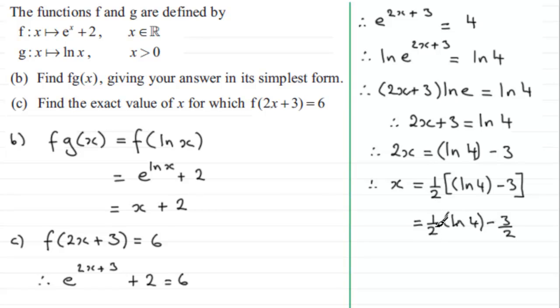And you can use this half, you can take it up as a power on the natural log, so you therefore have the natural log of 4 to the power half, and then you've got your minus 3 over 2.